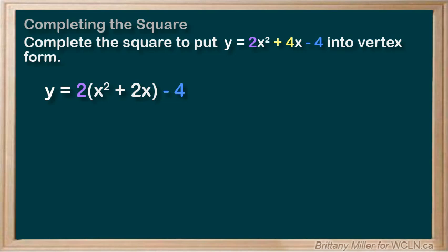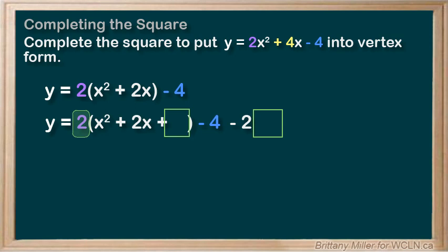Then we add our boxes. We add one box inside of the brackets, which means it's actually multiplied by that 2. So we need to subtract 2 times the box on the end, keeping things equal.